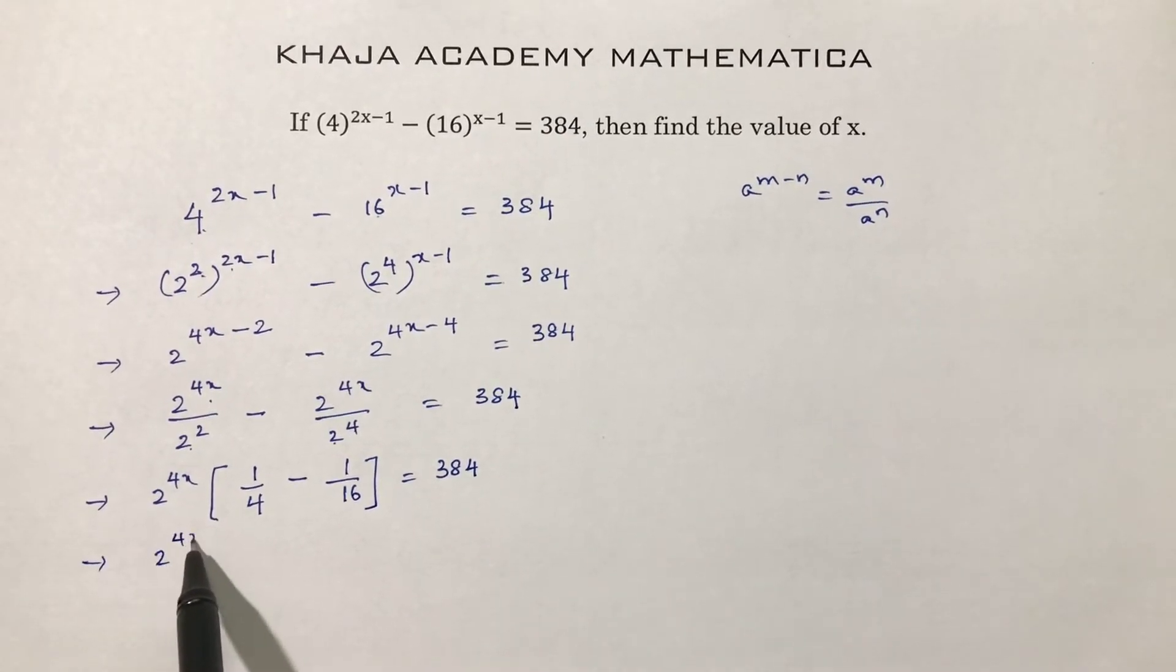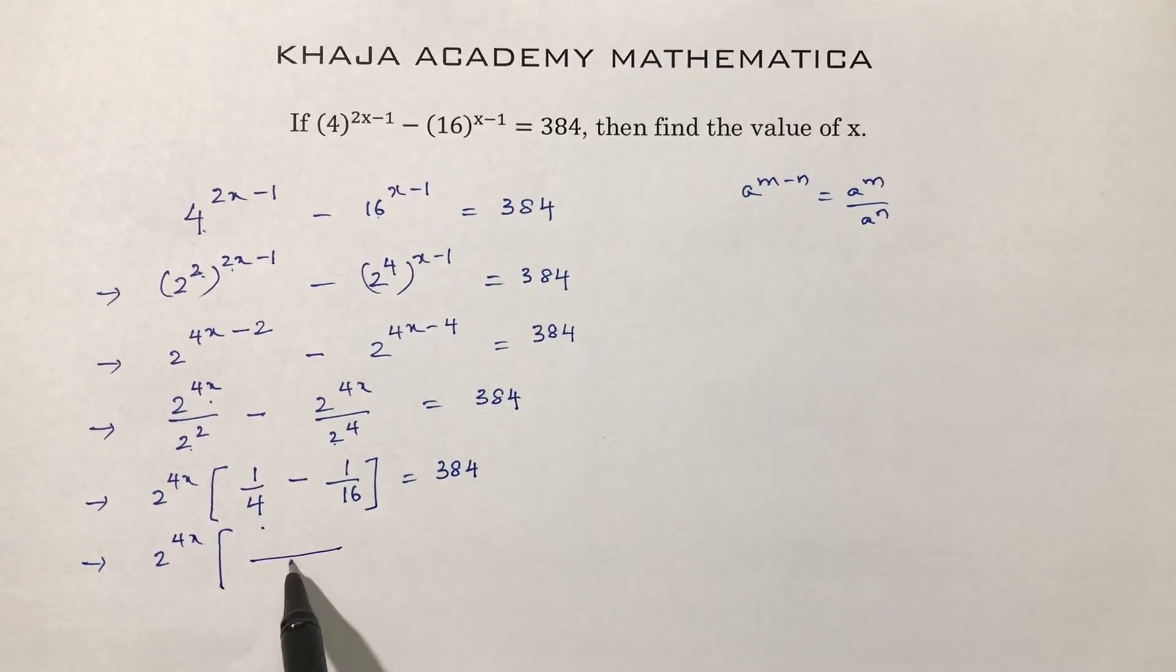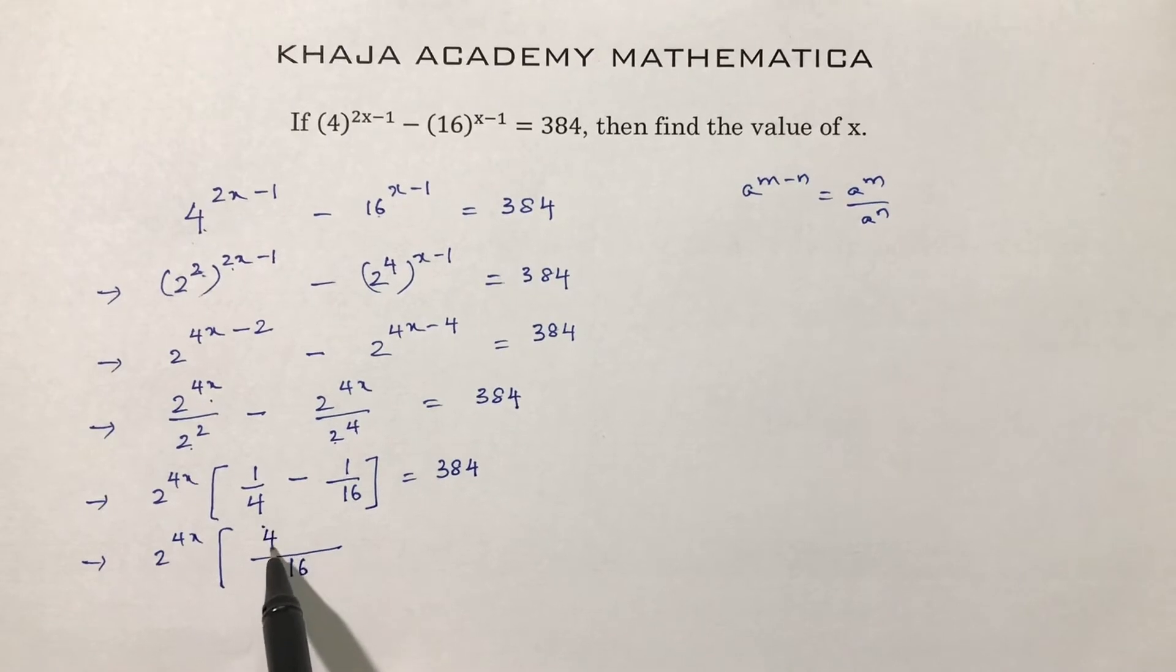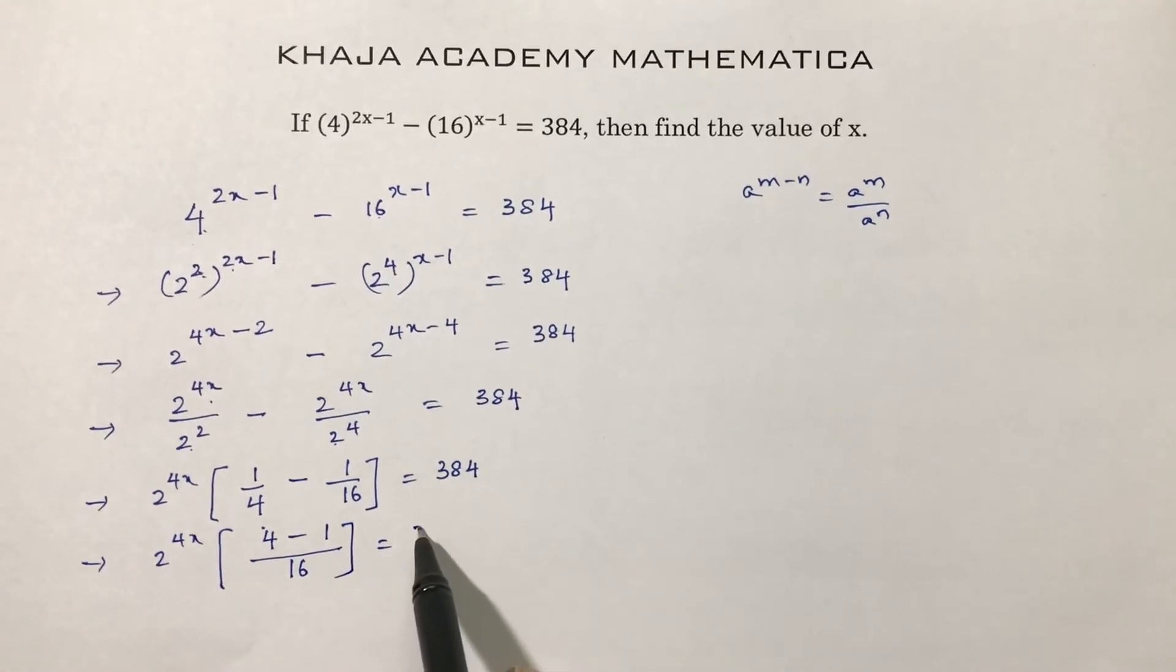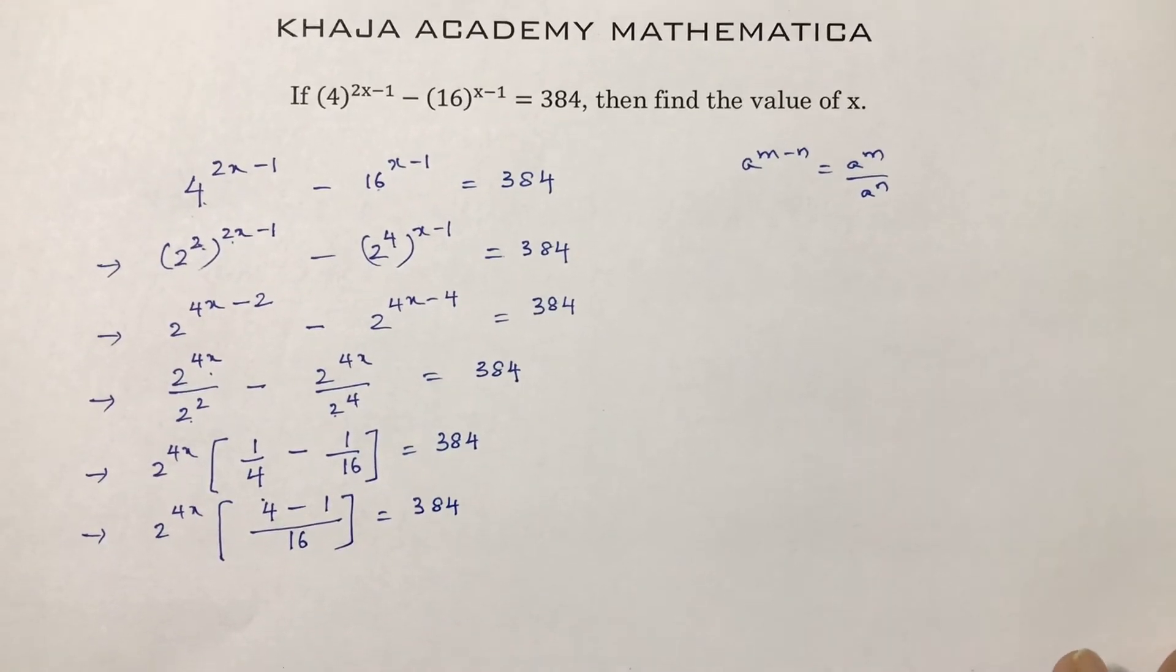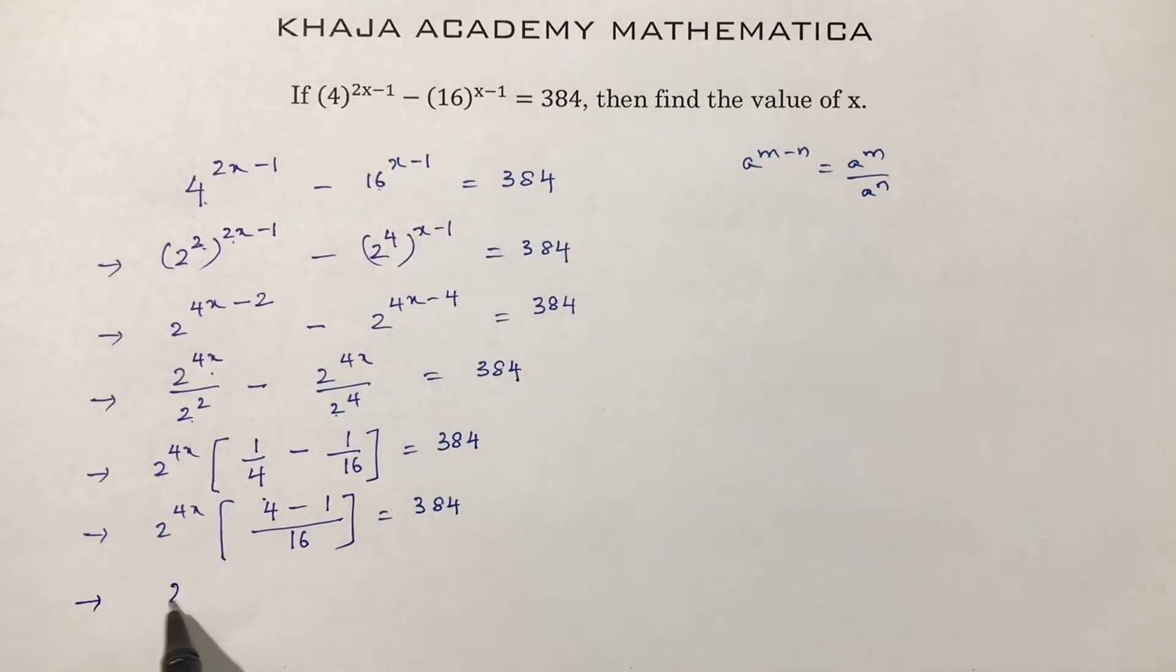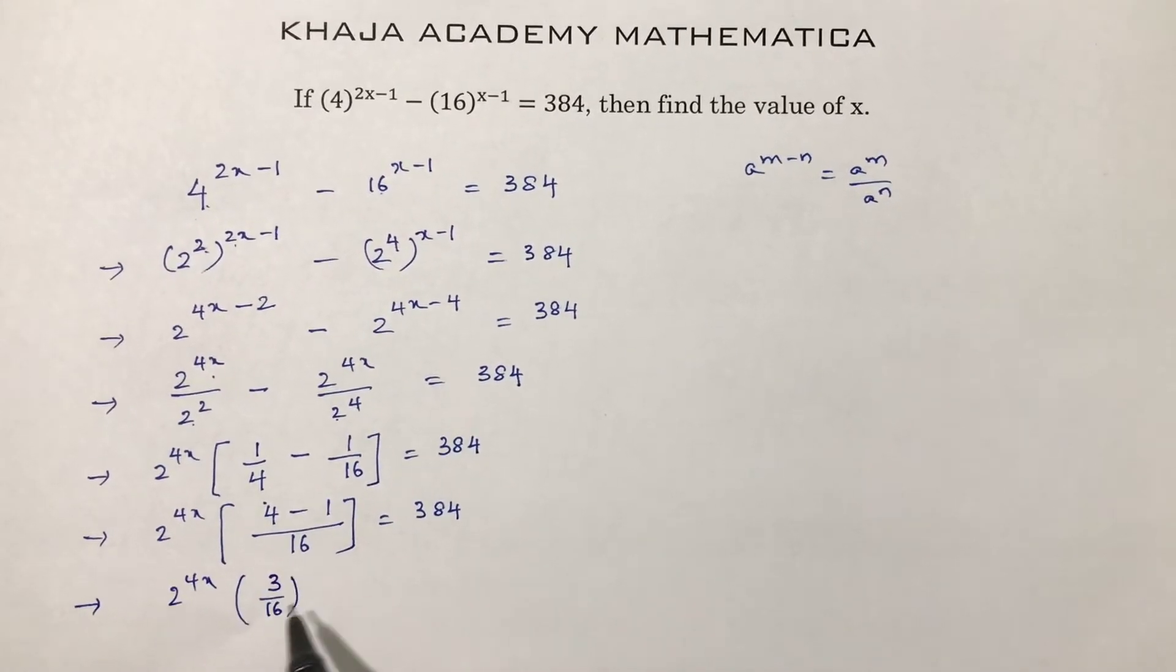So now 2 power 4x in 4 and 16, you will get 4 times 4 minus 1 equals 384. Now here 2 power 4x into 3 by 16.